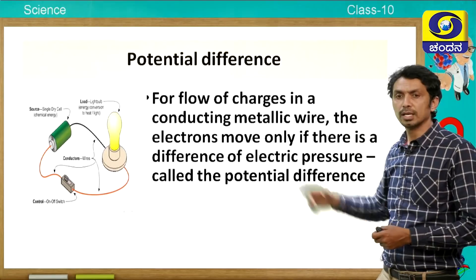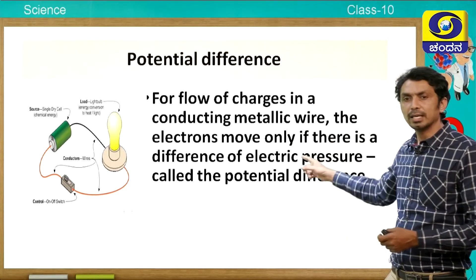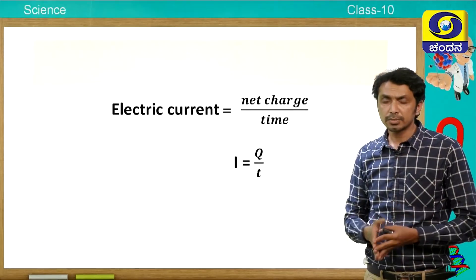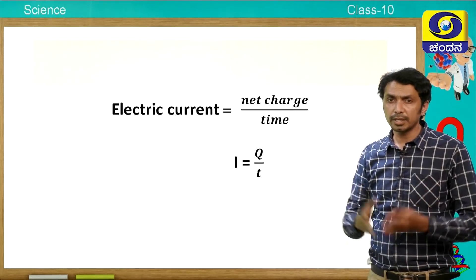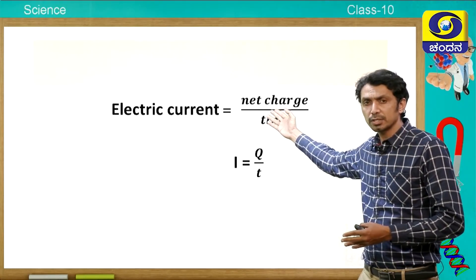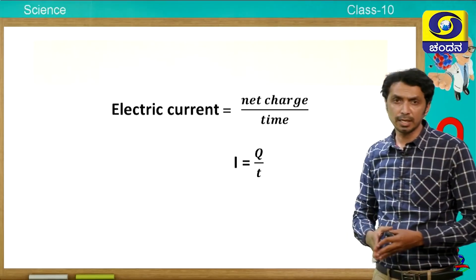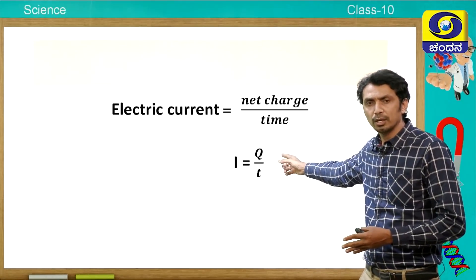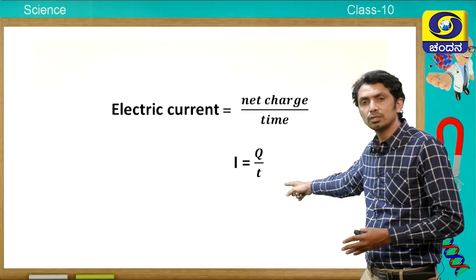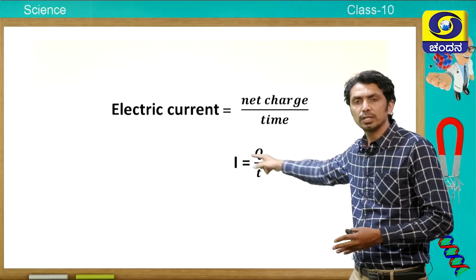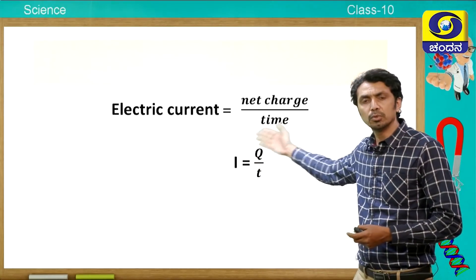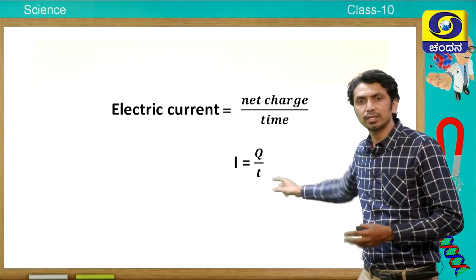The electrons already present in the wire will not move in one particular specific direction. The reason is there has to be some work done. That cell is doing that work by bringing the potential difference - that is the difference in pressure of charges at its ends. For flow of charges in a metallic wire, the electrons move only if there is a difference in electric pressure. Electric current is the amount of charges flowing through a cross-sectional area in unit time - that is Q divided by T.